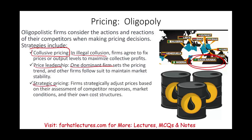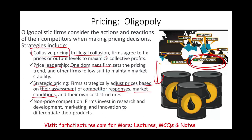Firms also use strategic pricing, adjusting prices based on their assessment of competitor responses, market conditions, and their own cost structure. For example, during COVID, they cut down their production because they didn't want to produce oil and put it in storage without selling it, which would force them to reduce their prices. They invest in research and development, marketing, and innovation to differentiate their product — though for oil companies, they don't really need marketing because everybody needs oil.